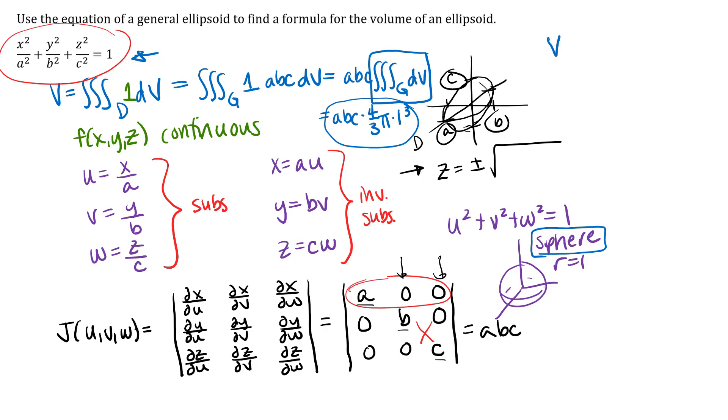I'll write that out here to this side, 4 thirds pi abc. So it's similar to the volume formula for a sphere. Remember that the volume formula for a sphere is 4 thirds pi r cubed. The idea here is that instead of a radius that's the same in all different directions, you've got sort of different dimensions in different directions.